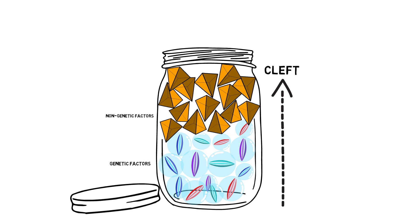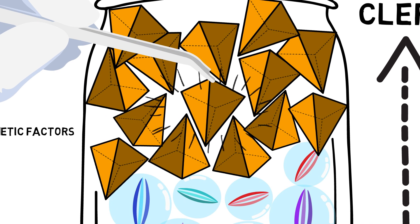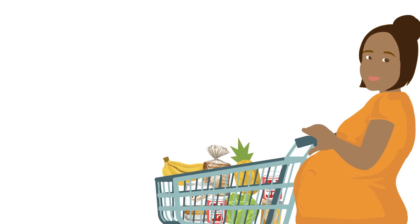In the Cleft Collective, we want to find out more about what's going into the jar. If we knew the things, both genetic and non-genetic, that caused clefts, we might be able to suggest ways to remove some of the triangular blocks to reduce the chance of a cleft developing.